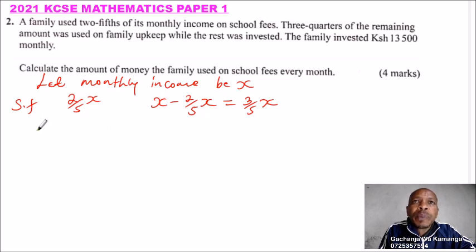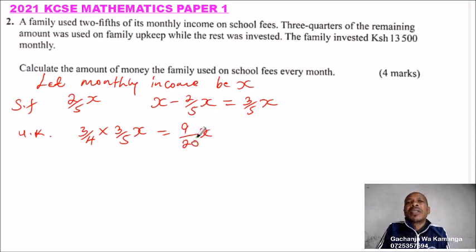For upkeep, you say 3/4 of 3/5x. You multiply, and you can use your calculator to get 9/20x. So that was used for family upkeep.